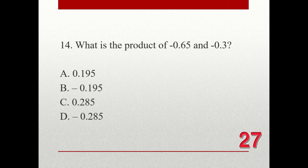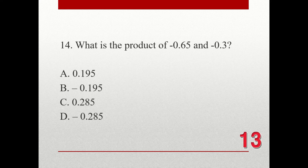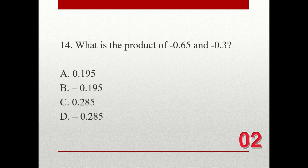Question number 14. What is the product of negative 0.65 and negative 0.3? A. 0.195. B. Negative 0.195. C. 0.285. D. Negative 0.285. The correct answer is A. 0.195.